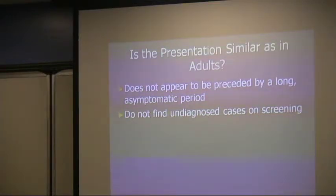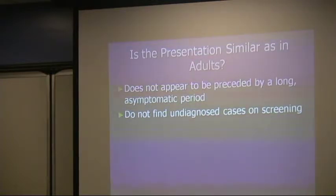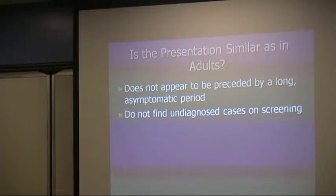The course of type 2 diabetes in children can be a little different compared to adults. It does not appear to be preceded by a long asymptomatic period. If you have a child suspected of having type 2 diabetes, they already have an abnormal hemoglobin A1c and abnormal glucose levels, either fasting or post-meal.